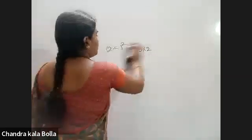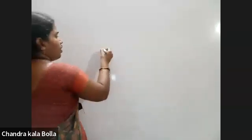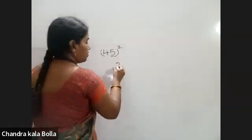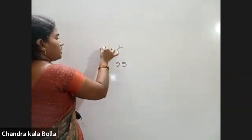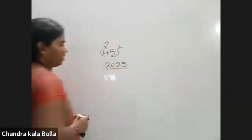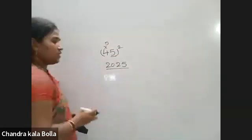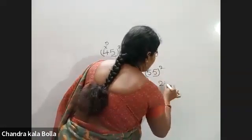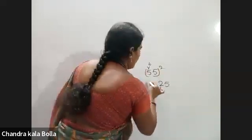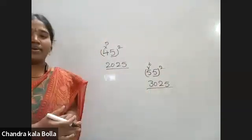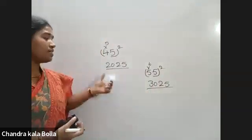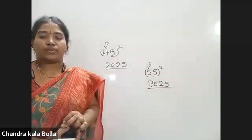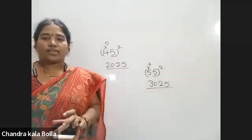For example, 45 whole square: ones place is 5, so 5 squared is 25. Next, 4 and 5 is the next number; 4 fives are 20. So answer is 2025. Next, 55 whole square: 5 squared is 25. Next, 5 and 6; 5 sixes are 30. So answer is 3025. So simple — we will test it easy. Let's move forward to the next class.